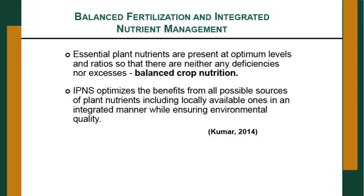What is balanced fertilization or crop nutrition? Essential plant nutrients are present at optimum levels and ratios so that there are neither any deficiencies nor excess — that is balanced crop nutrition. IPNS (Integrated Plant Nutrient Supply) optimizes the benefits from all possible sources of plant nutrients. Here you can combine locally available organic sources and biofertilizers in an optimized, integrated manner while ensuring environmental quality.